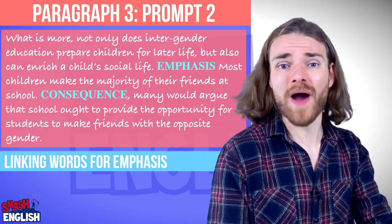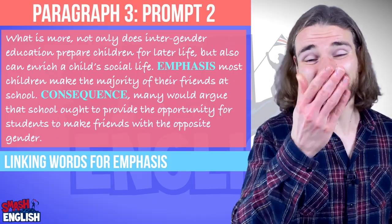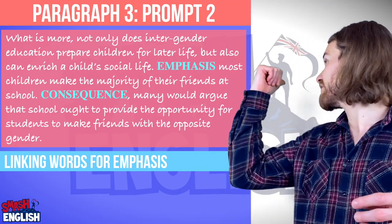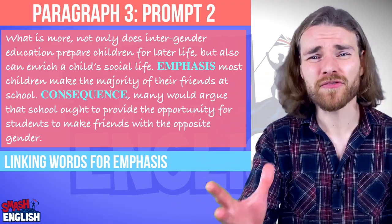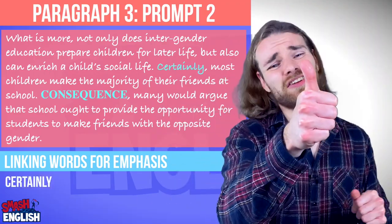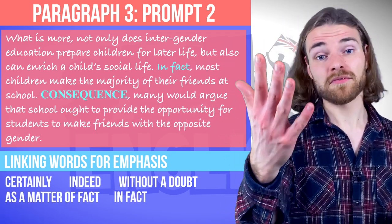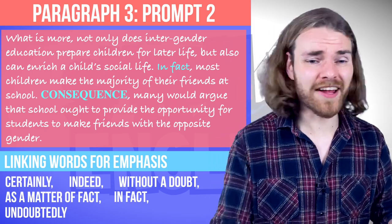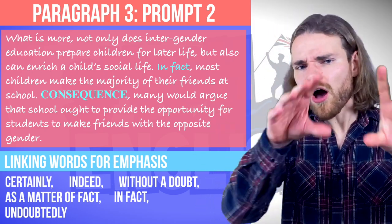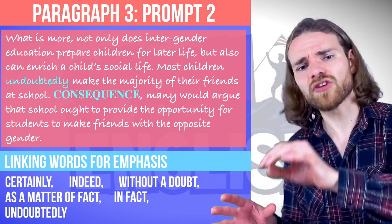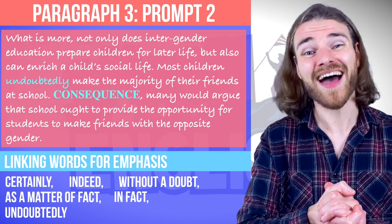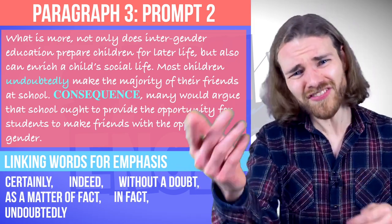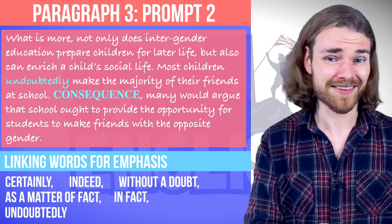And now we want to add emphasis. Our next sentence is expanding on the point of the previous sentence and to emphasize this we can say 'certainly', 'indeed', 'without a doubt', 'as a matter of fact' and 'in fact'. Remember we need commas after these. We can also say 'undoubtedly' — I love this word. We put it after the subject, so: 'most children undoubtedly make the majority of their friends at school'. Try using it!